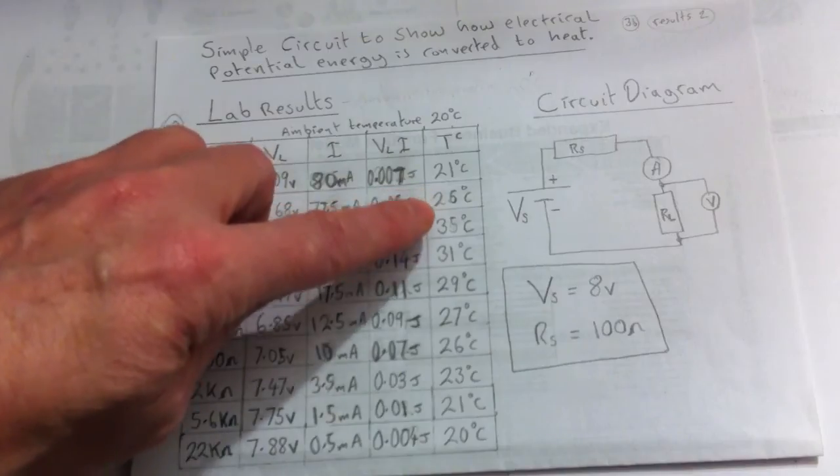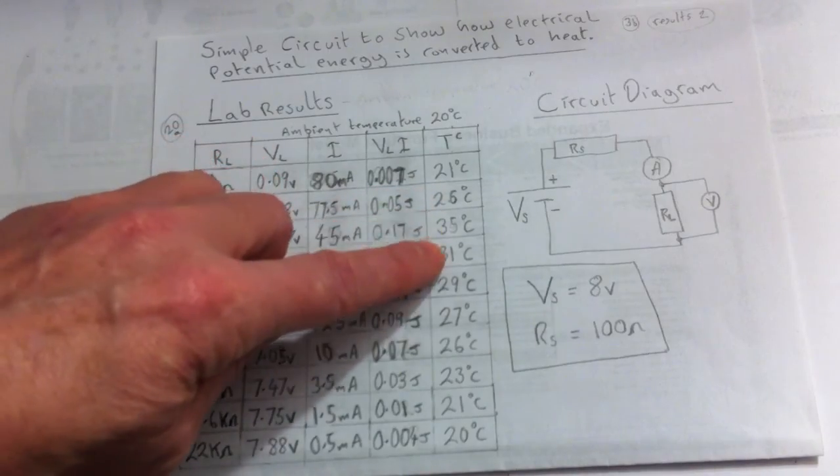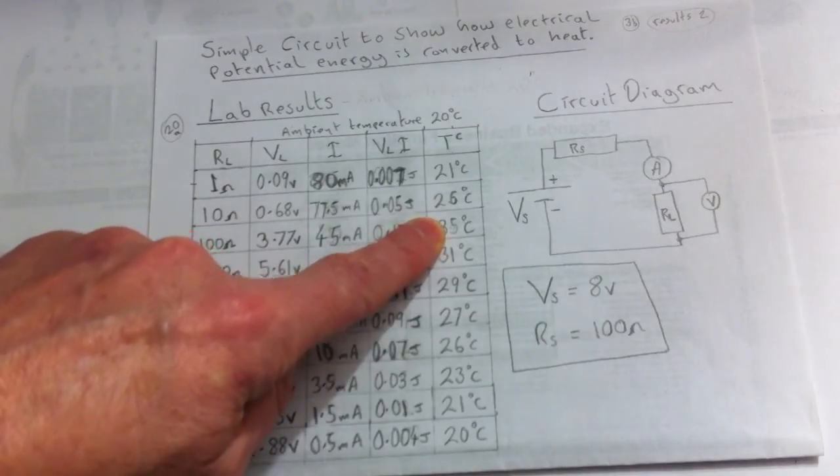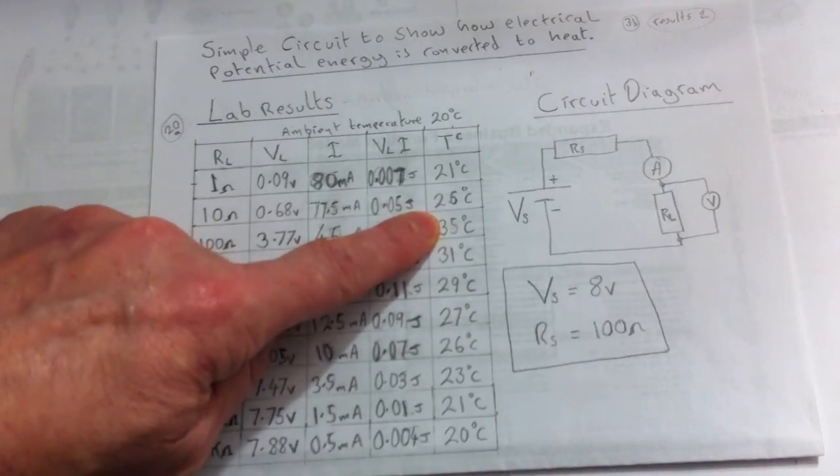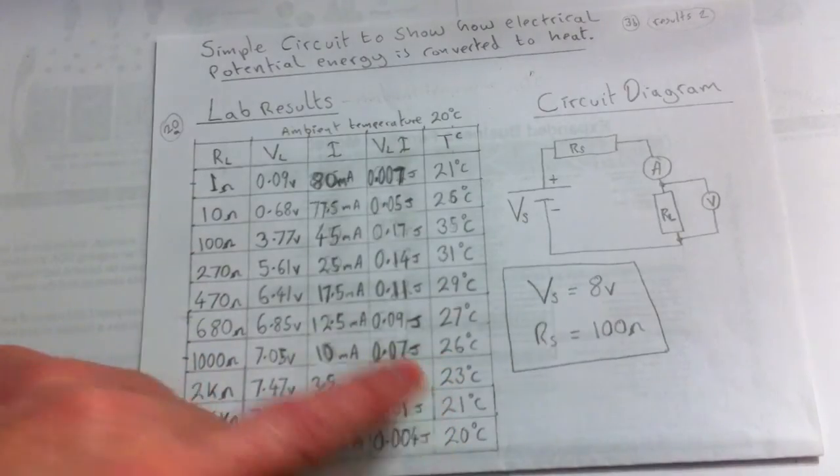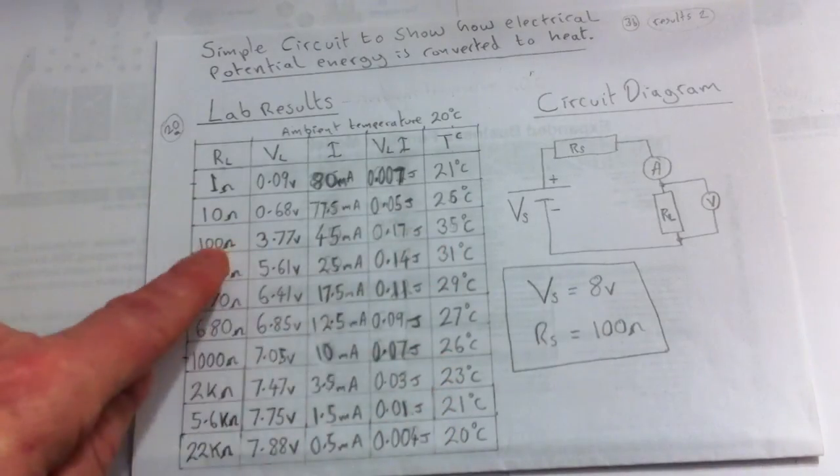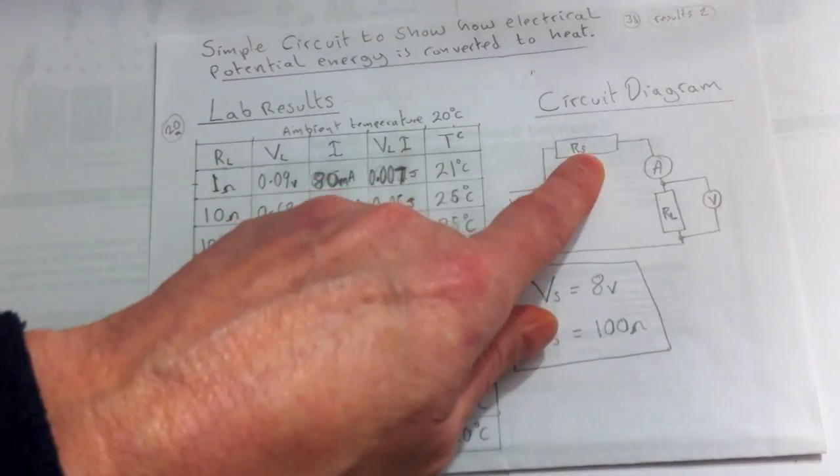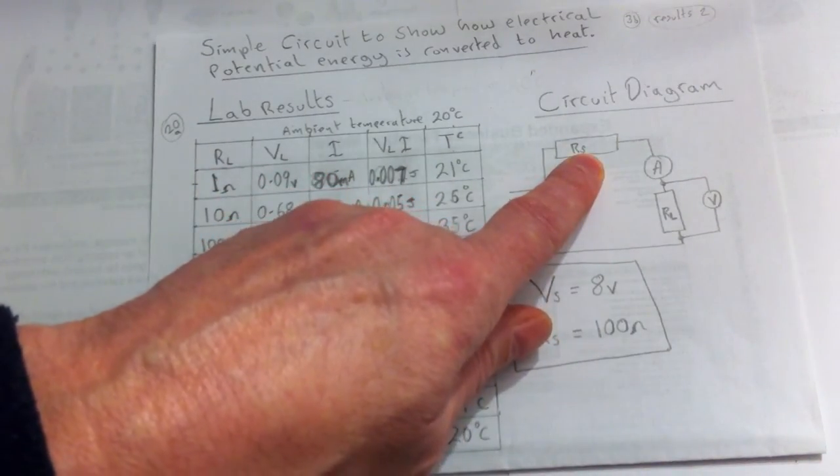You see it goes from 21, 25, 35, then down to 31. So there seems to be, it's quite clear that there's a spike there of 35 degrees. And then it drops off back down to 20 again. And where there's 35 degrees, we can see it's at 100 ohms. 100 ohms is actually what the source resistance is.